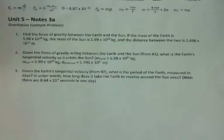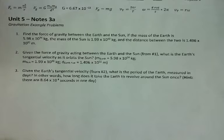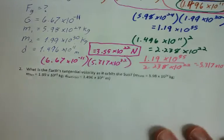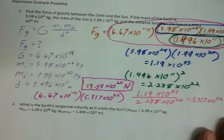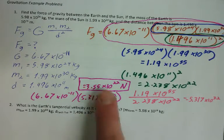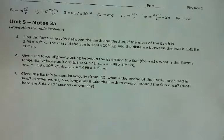All right. Number one, find the force of gravity between the earth and the sun. If the mass of the earth is 5.98 times 10 to the 24th kilograms, the mass of the sun is 1.99 times 10 to the 30th kilograms, and the distance between the two is 1.496 times 10 to the 11th meters. Now you might be saying to yourself, didn't we do that already? And the answer is yes, we did. So we're just going to write the answer down. This is the value for the earth and the sun. This was the example we did last time. Here's the answer. I'm just going to write the answer down.